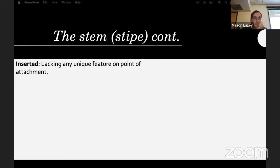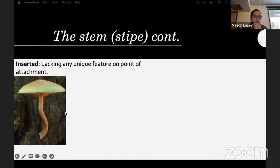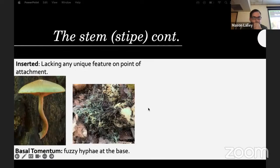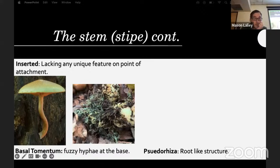Looking at where the stipe meets the substrate at the base: inserted means it's lacking any unique features, just going straight into wood. Basal tomentum means fuzzy hyphae at the base — like this species of Boletus or Neoboletus that has yellow mycelium at the bottom visible right at the base before you pull it up.